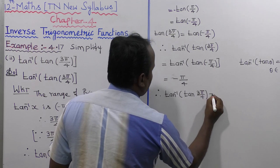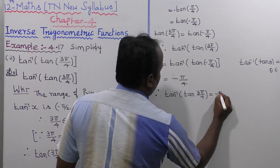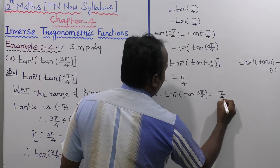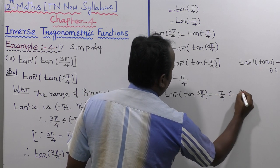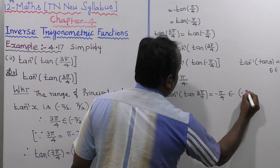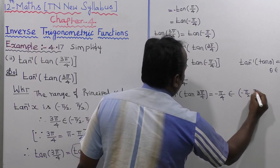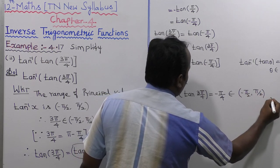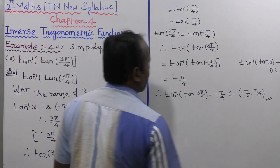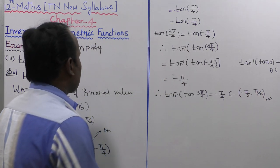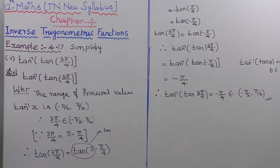Therefore, tan inverse of tan(3π/4) equals minus π/4, which belongs to the interval minus π/2 to plus π/2. That is the solution to Example 4.17.